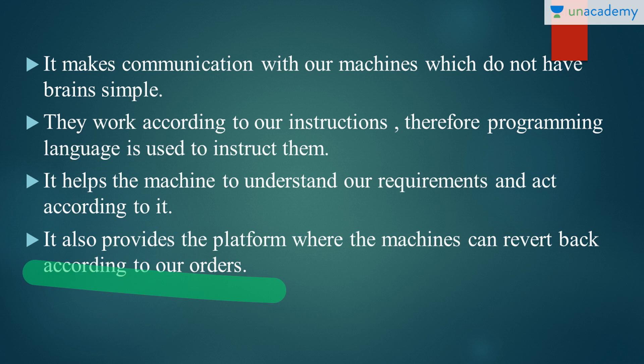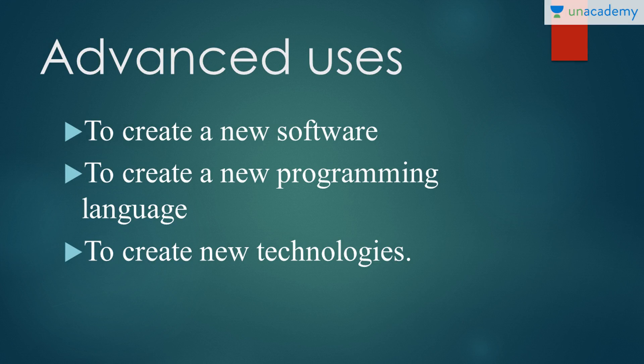It helps the machine to understand the requirements and act according to it. It also provides the platform where the machines can revert back to our orders. Programming language works as a platform, like an interpreter, where we can understand the machine and the machine can understand us. It's obvious that if we have to converse with the machine, we will not be asking how are you, etc. But we humans always need, if we are conversing, the other should reply. Therefore, proving the selfishness or the need of humans, they developed something that could help them and ease their communication with the machine. So a new software known as programming language was developed.